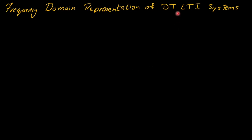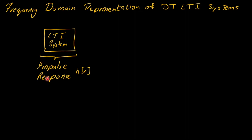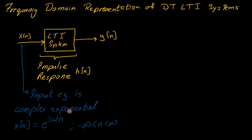In digital signal processing, frequency domain representation of discrete time LTI systems are of high significance. We assume a linear time invariant system with known impulse response h of n. We insert input x of n and at the output we get y of n. Assume the input is a complex exponential e to the power j omega n, where n is the time index from minus infinity to infinity, n is an integer, and omega is in radians per sample.